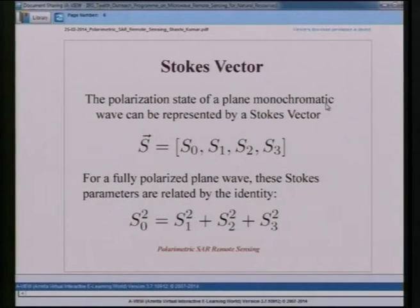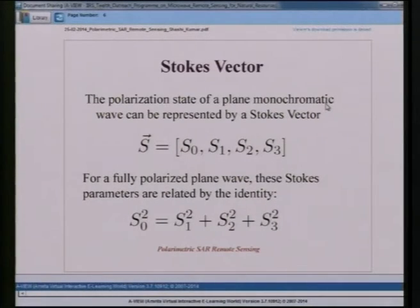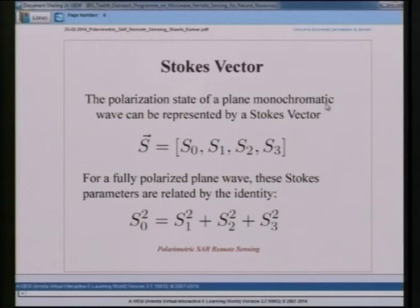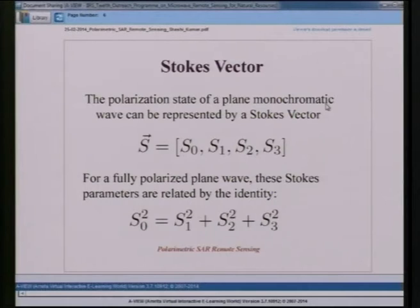The Stokes vector is a data format derived using the concept of the polarization ellipse. The polarization state of a plane monochromatic wave can be represented by the Stokes vector, with four components: S0, S1, S2, and S3 — also known as the Stokes parameters. In the case of a fully polarized electromagnetic wave, S0² = S1² + S2² + S3². For partially polarized waves, this equality does not hold exactly.